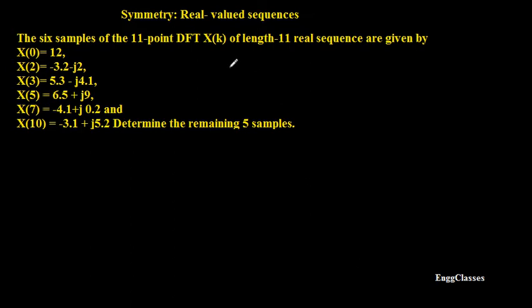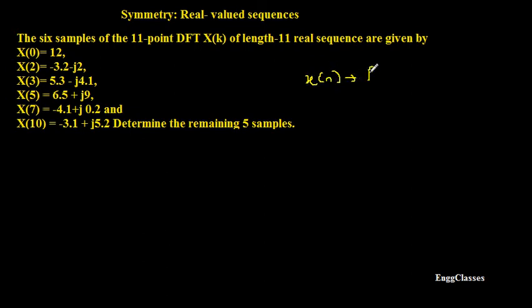Here we are solving a numerical on the property of symmetry. As per the problem, 6 samples of the 11-point DFT X(k) of a real sequence of length 11 are given, and it has been asked to determine the remaining 5 samples. So 6 points are given and the remaining 5 points need to be found.